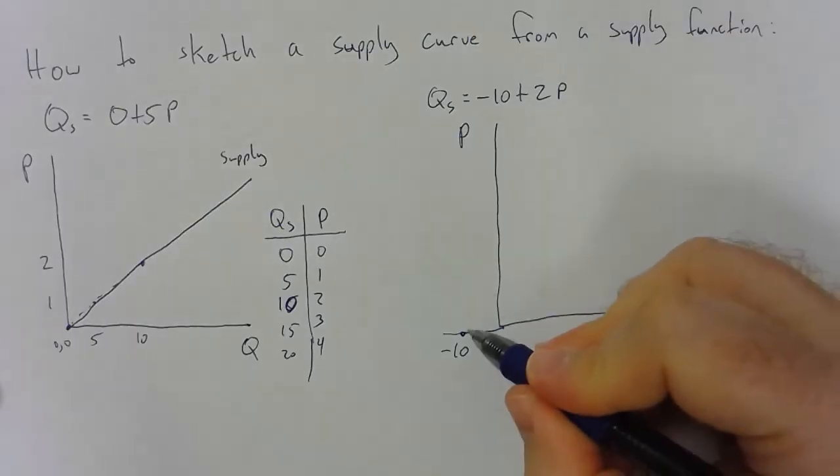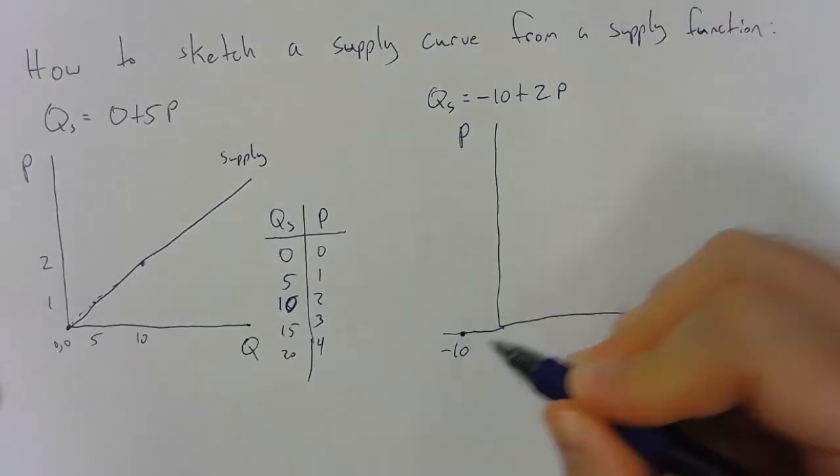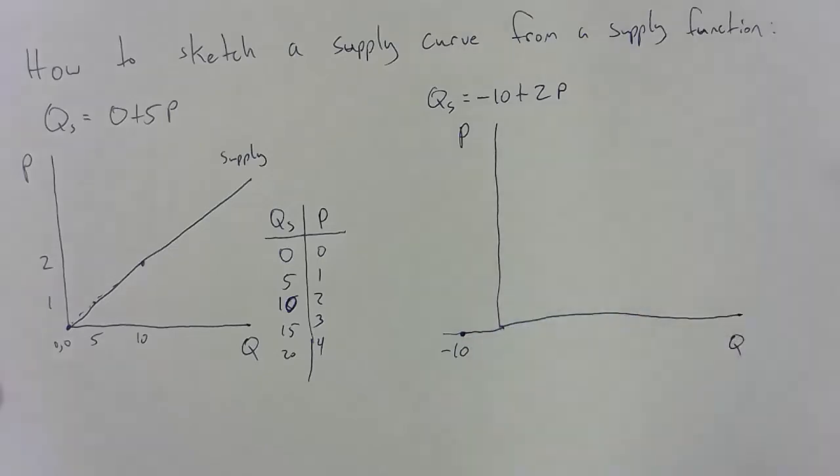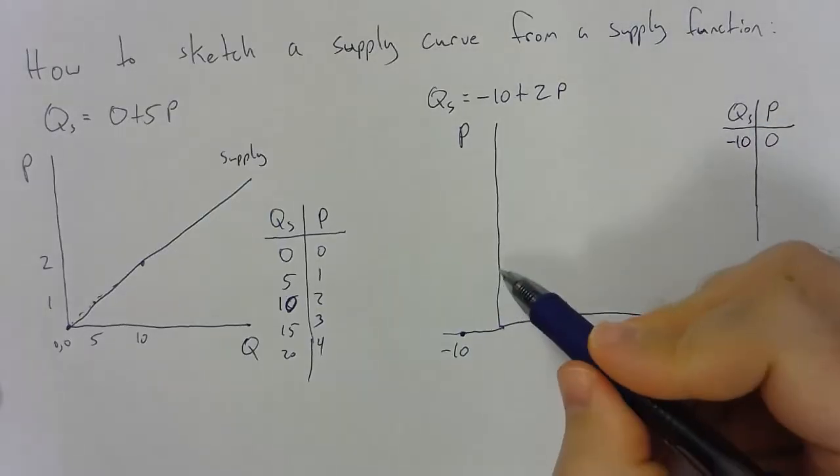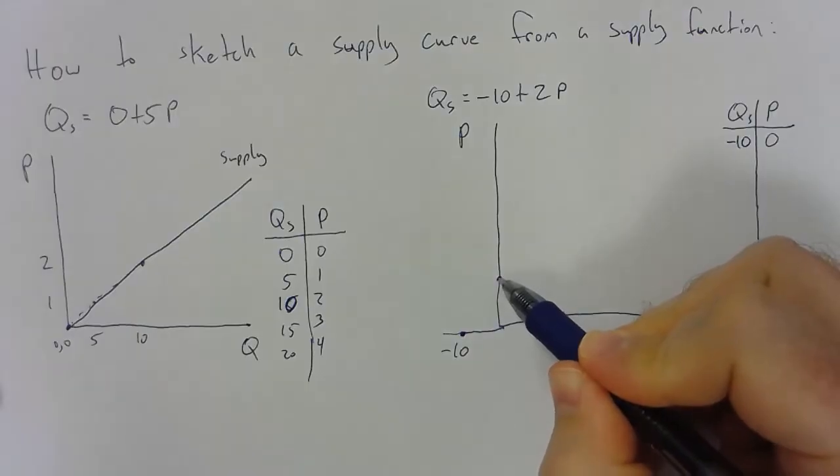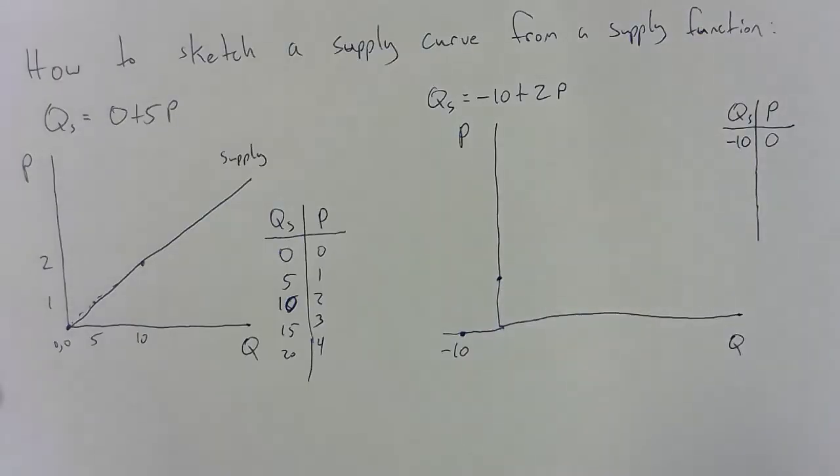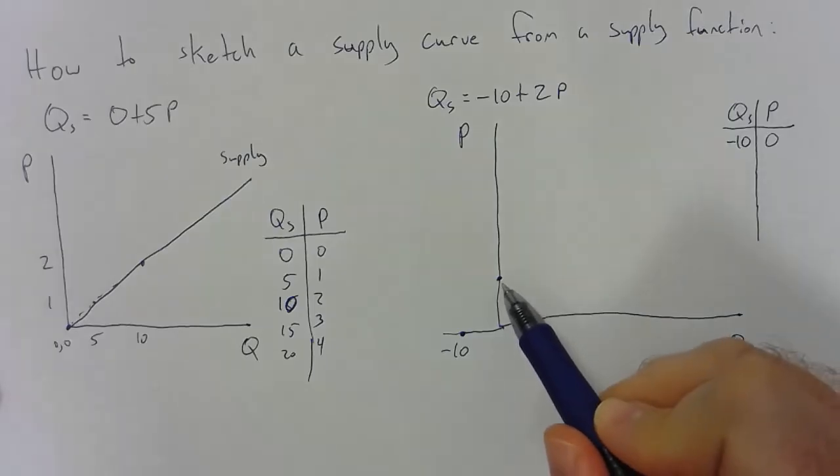So what you have to do here is start at negative ten. So if P is equal to zero, we supply a negative amount, which isn't possible, but it gives us the requirement that price has to be some value greater than zero. So what does that price end up having to be?